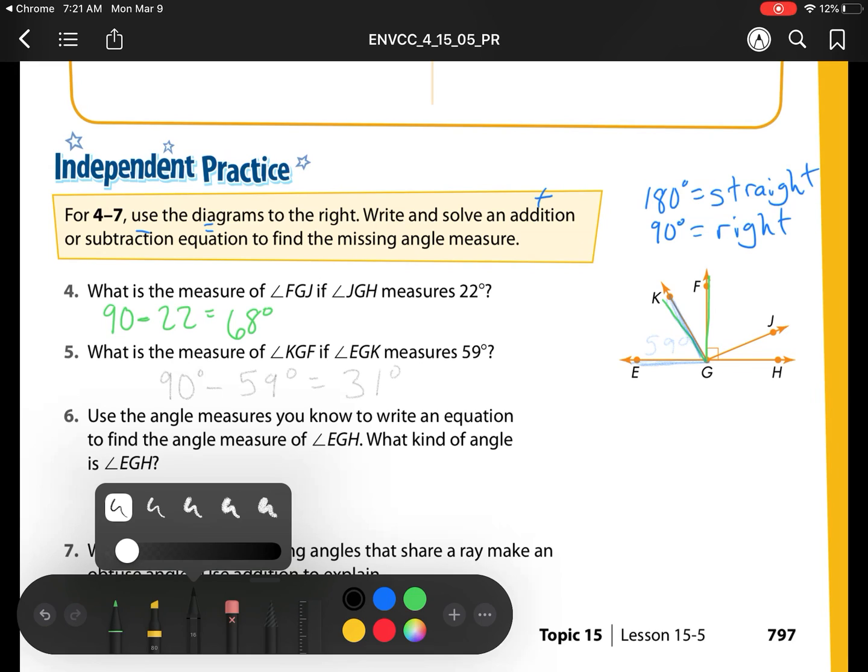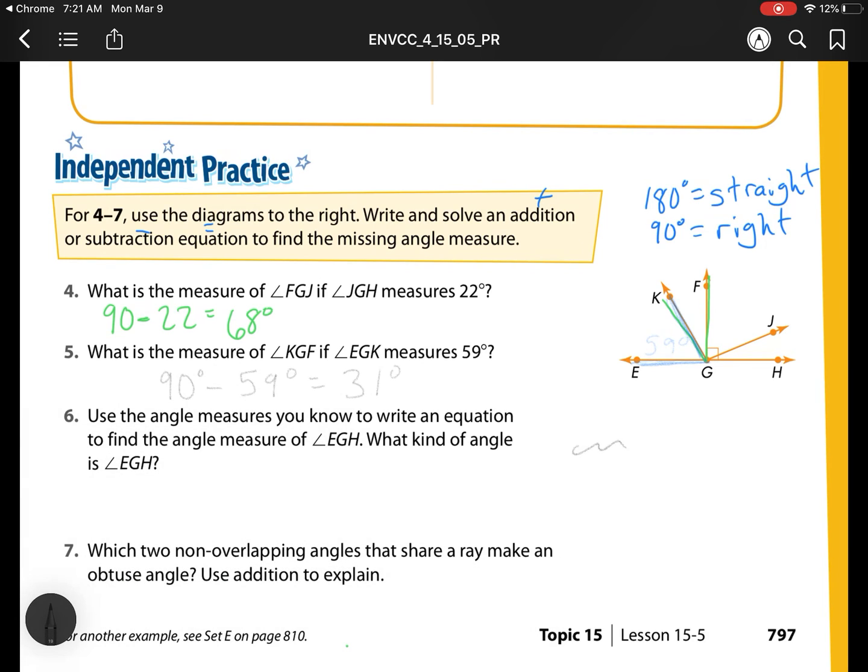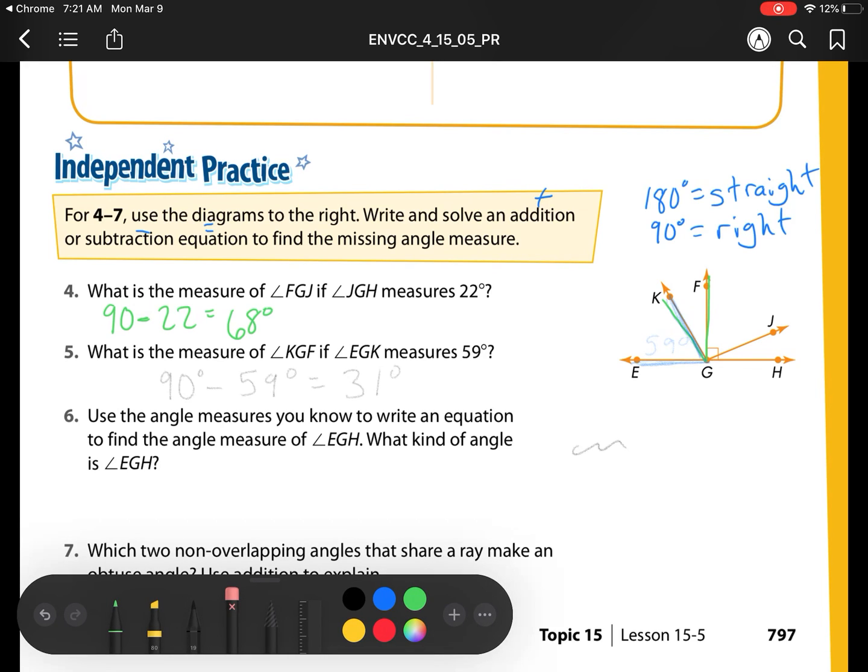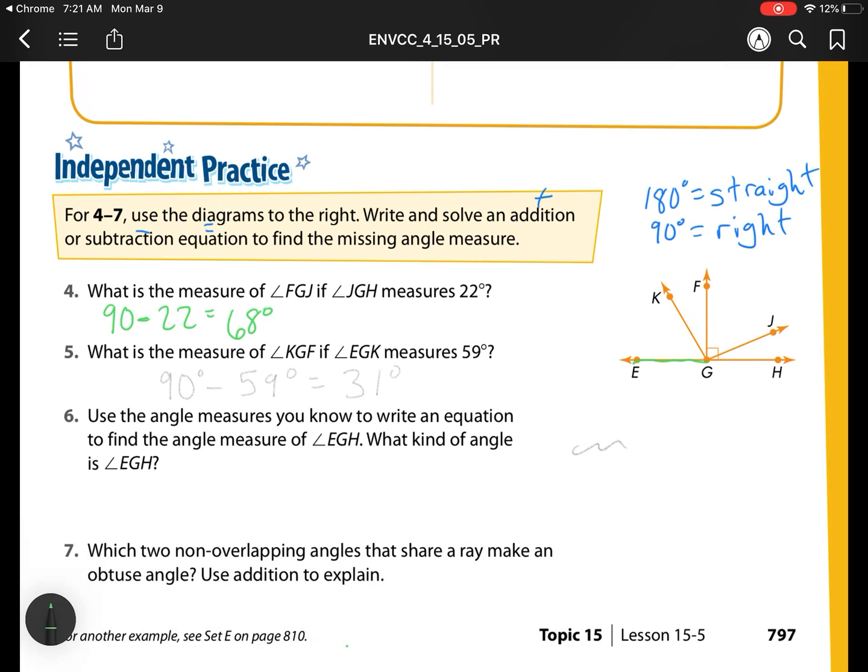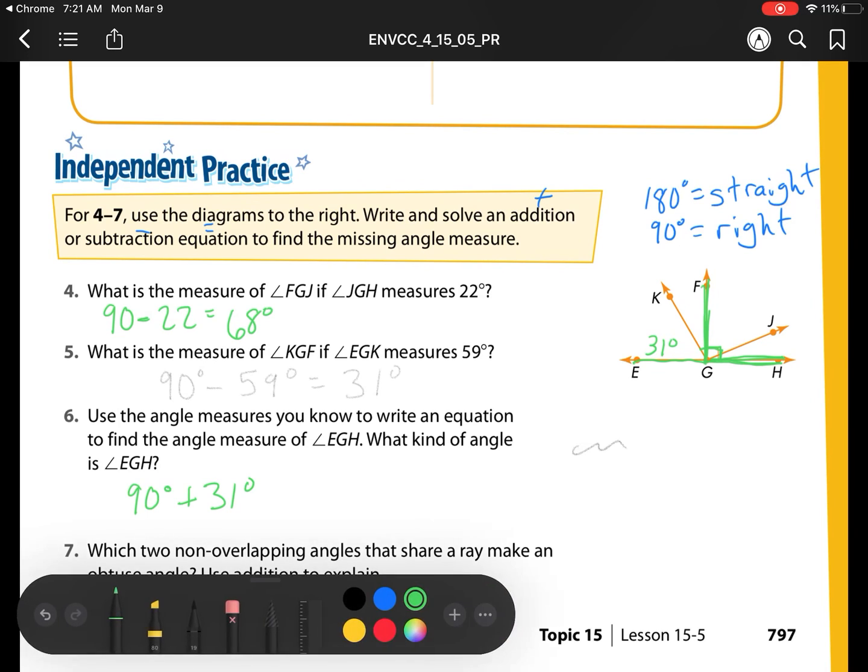So let's head on to our next one. Use the angle measures you know to write an equation to find the angle measure of this other mystery angle, EGH. What kind of angle is EGH? What I already know is I know that this measure of angle right here is 90 degrees. So I have one measure is 90 degrees.